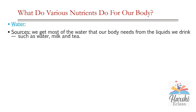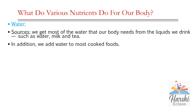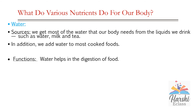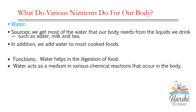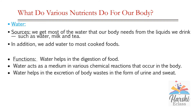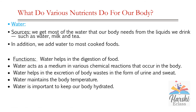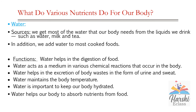Water. We know that around 70% of the human body is made up of water. We get most of the water our body needs from the liquids we drink, such as water, milk, and tea, and also the water we add while cooking food. Like roughage, water also doesn't contain any nutrients, but it helps in the process of digestion. Water acts as a medium in various chemical reactions that occur in the body — digestion, excretion, and circulation. Water helps in the excretion of body waste in the form of urine and sweat, maintains body temperature, keeps our body hydrated, and helps our body to absorb nutrients from food.